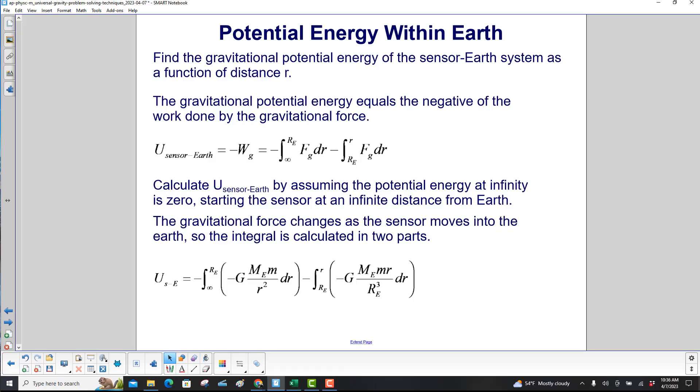The gravitational potential energy equals the negative of the work done by the gravitational force. Calculate the potential energy by assuming the potential energy at infinity is zero, starting the sensor at an infinite distance from Earth.